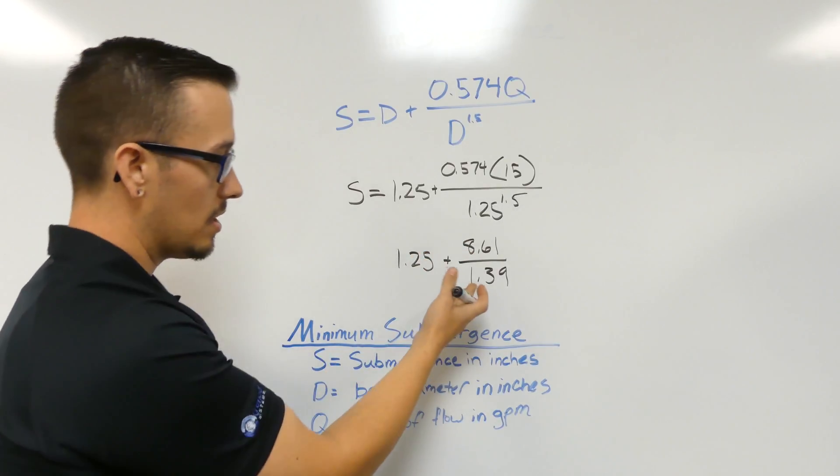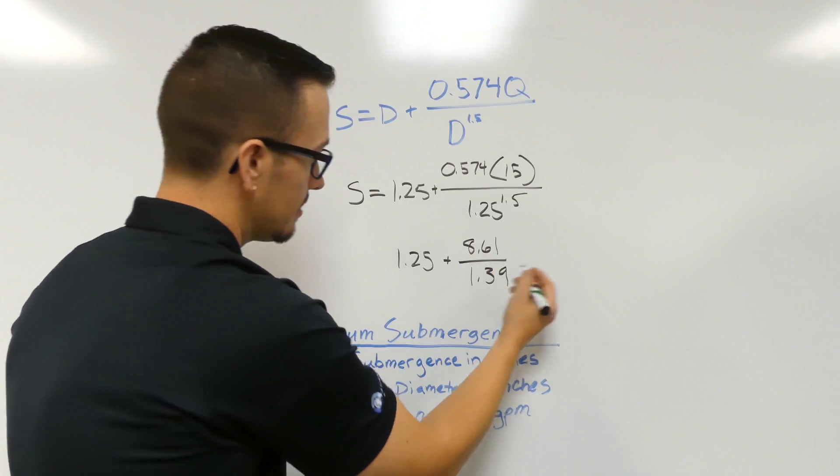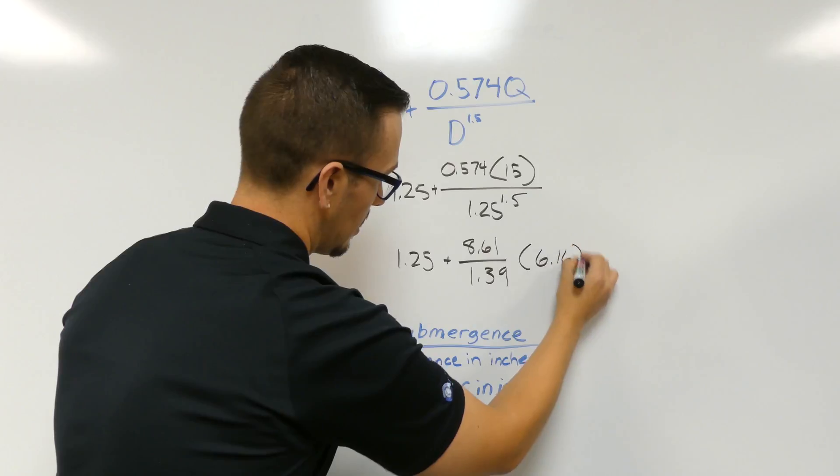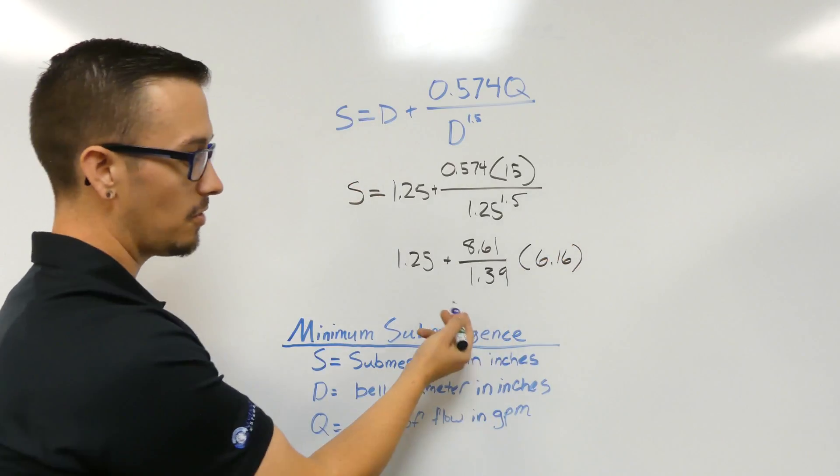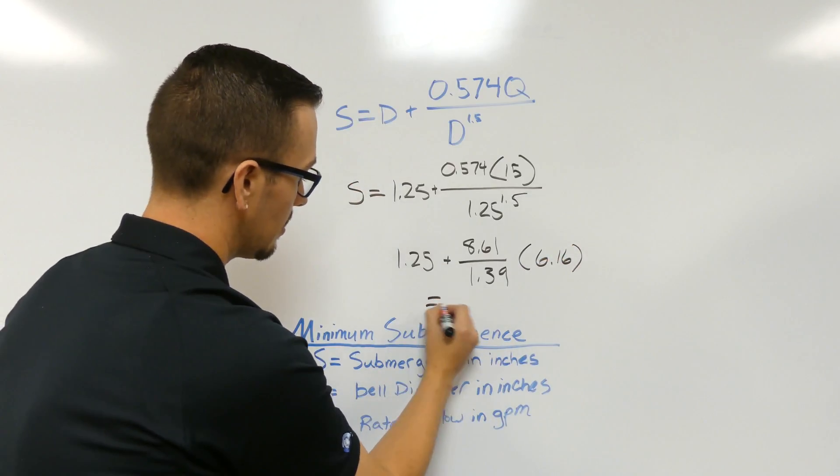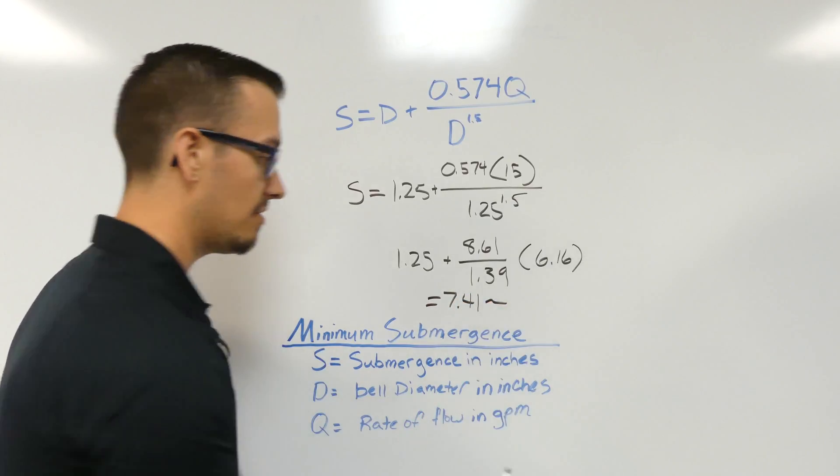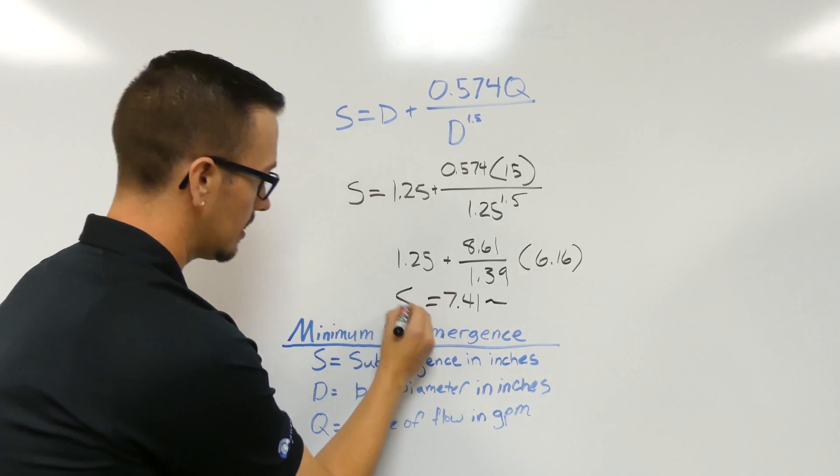8.61 goes into 1.39 6.16 times. So plus 1.25, we end up with 7.41 roughly, equals S.